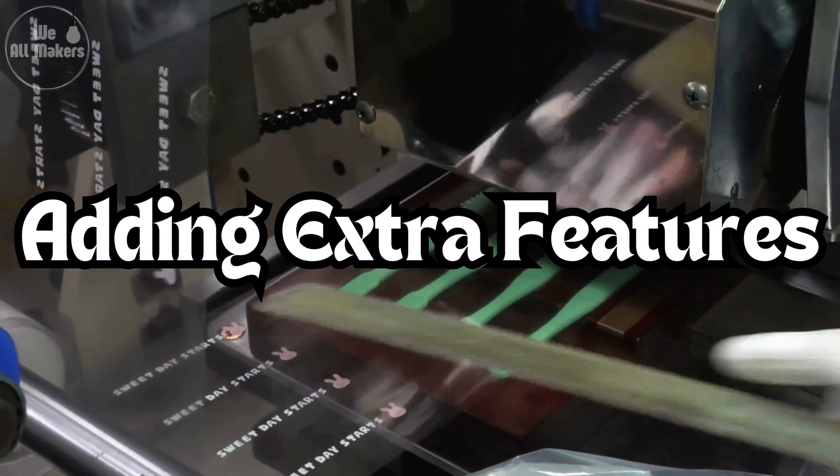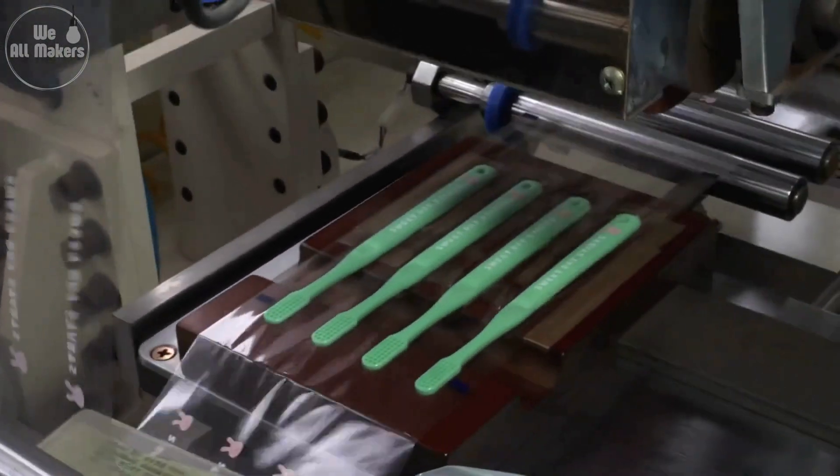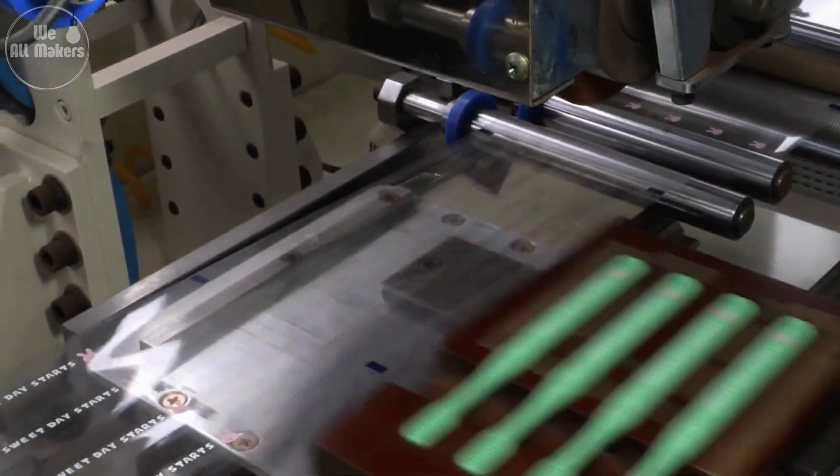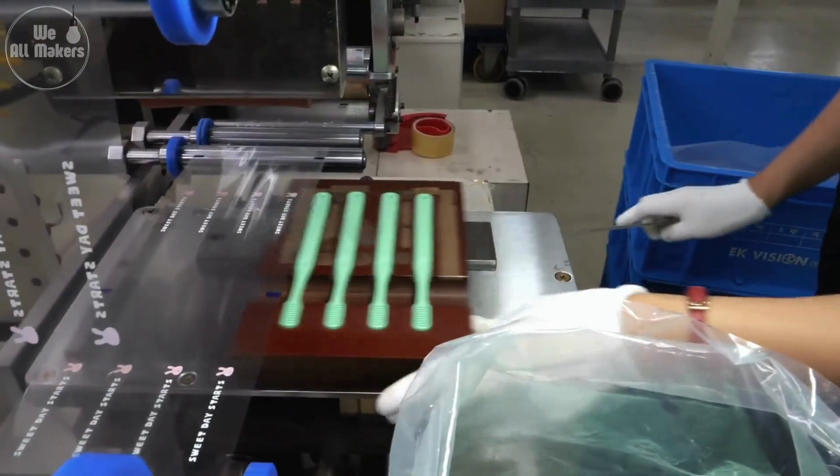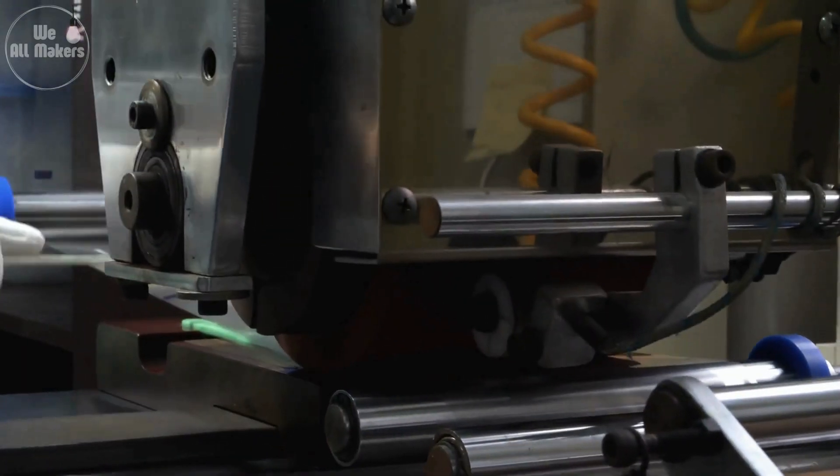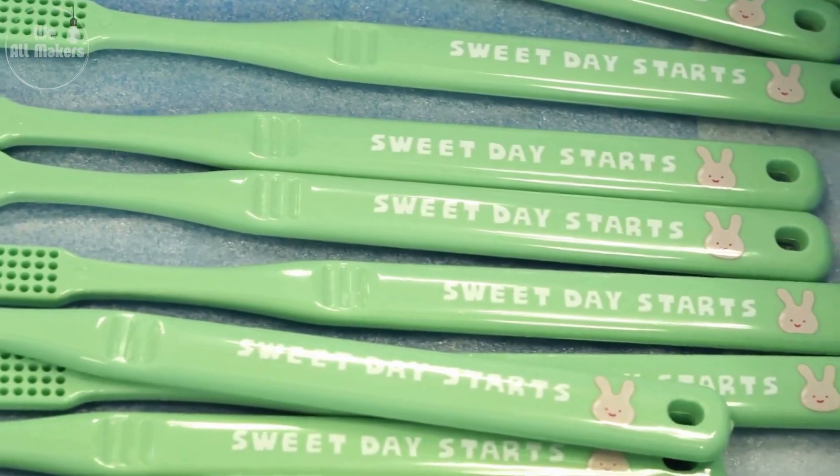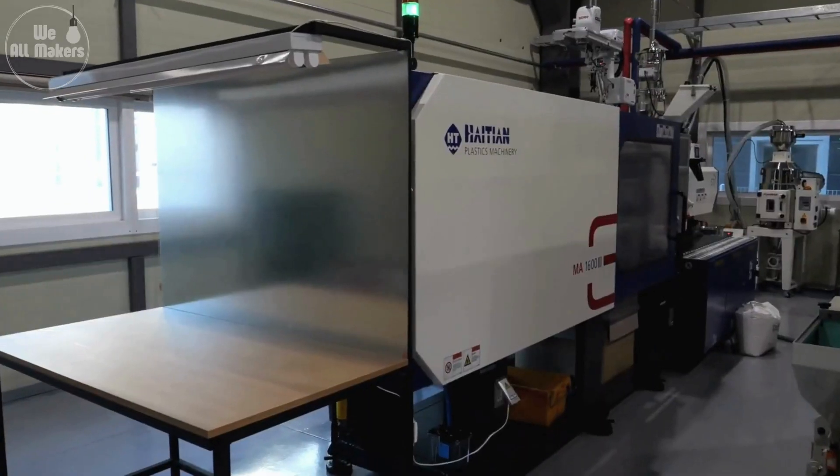Step 6: Adding Extra Features. If the toothbrush has extra features like rubber grips or a tongue scraper, they're added at this stage. These features aren't just for looks. They make the toothbrush easier to hold and more effective. It's like adding the final touches to a masterpiece.